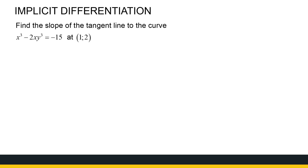Now let's look at a real example. Later on, when we look at exponential, logarithmic, trigonometric, and inverse trigonometric functions, we'll see how the product rule, chain rule, and quotient rule apply, and similarly with implicit differentiation. For now we're sticking to power functions. We want the slope of a tangent line at a point. The derivative of the left-hand side: first term gives 3x².